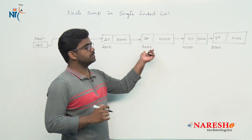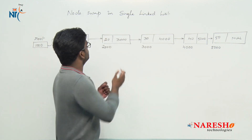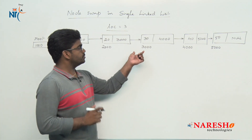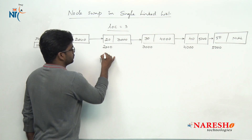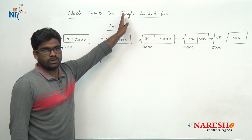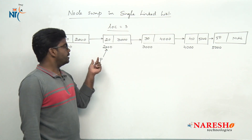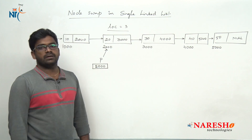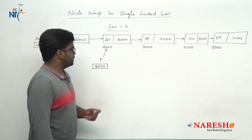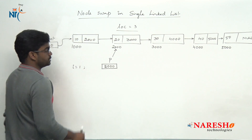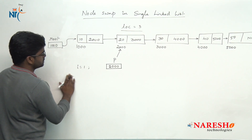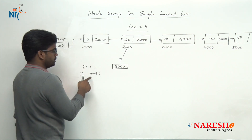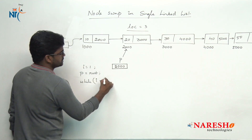Now I want to swap the third node and the fourth node. The location given is three, so we have to swap the third and fourth nodes. To swap these nodes, make a pointer pointing to the previous node. We move from root up to location minus 1. Take one pointer: let i = 1 initially and p = root, so p value is initially 1000.